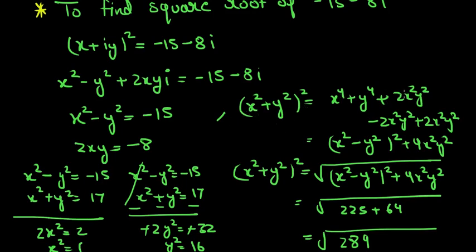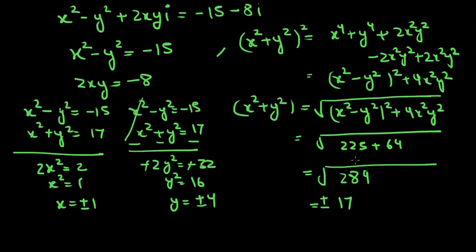The trick is to compute (x² + y²)² = (x² − y²)² + (2xy)². We add and subtract 2x²y² to get x⁴ + y⁴ + 2x²y² = (x² − y²)² + 4x²y². Substituting: (−15)² + (−8)² = 225 + 64 = 289, so x² + y² = √289 = 17. Taking the positive value gives x² + y² = 17.